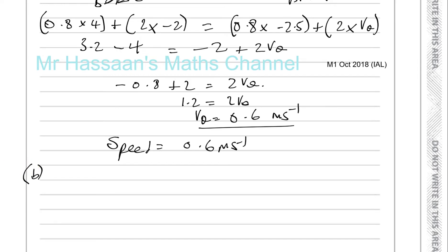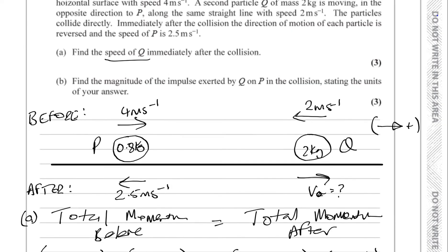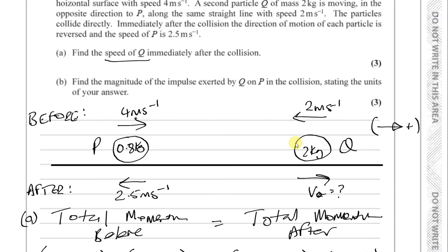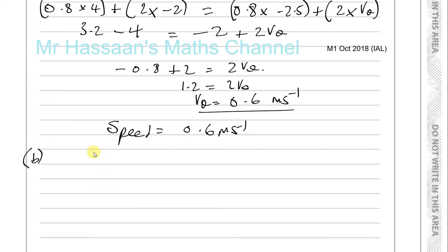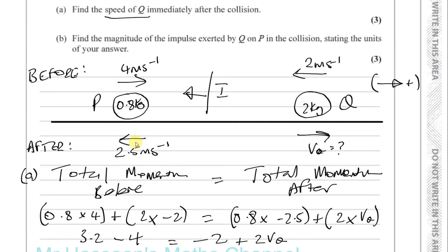Now part B is asking us to find the magnitude of the impulse exerted by Q on P. The impulse exerted by Q on P will be in a certain direction, but they only care about the magnitude. The magnitude of the impulse received by P and Q will be the same, but the direction will be opposite. The magnitude of the impulse is equal to the change in momentum. If we consider P, we know its velocities before and after the collision from the given data.